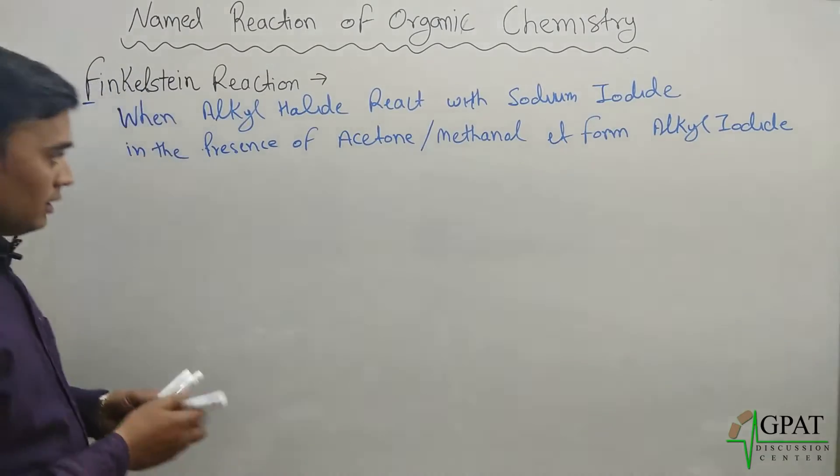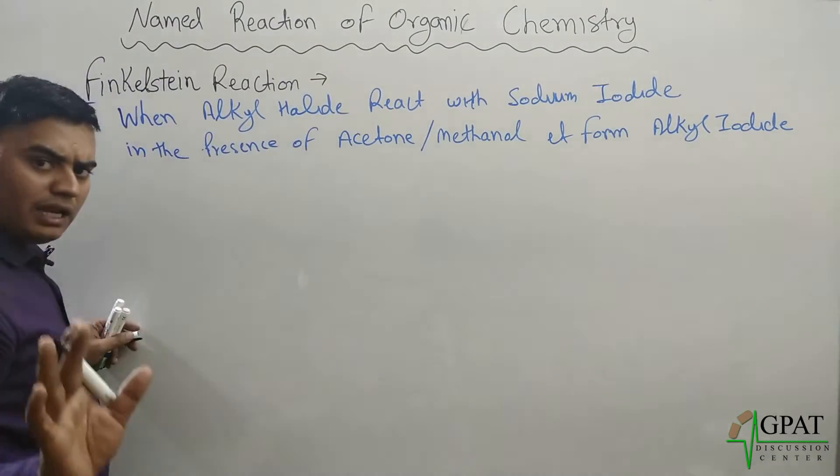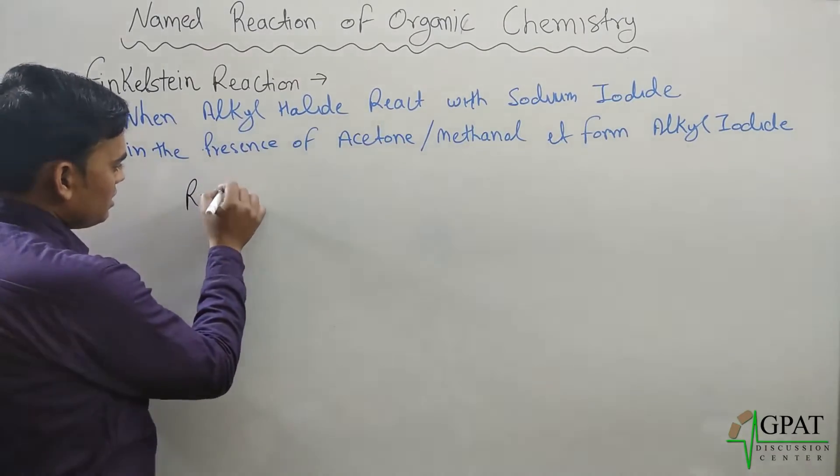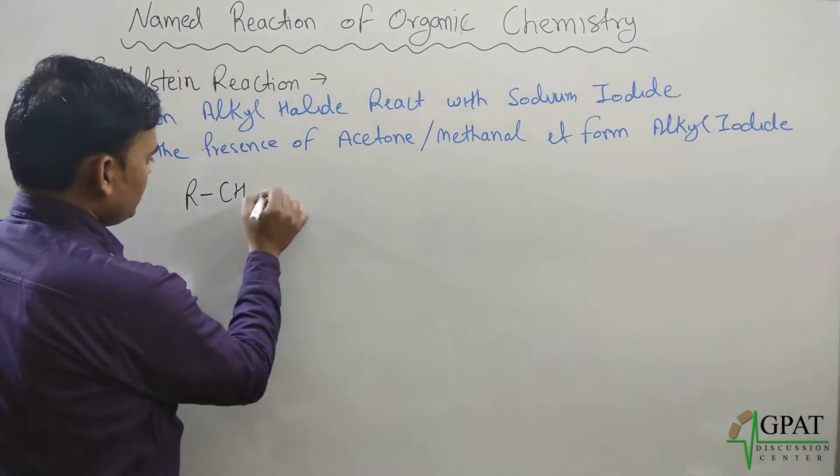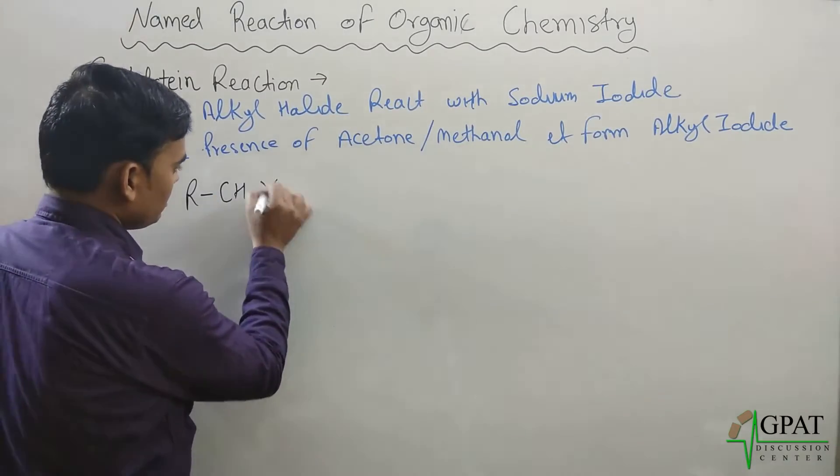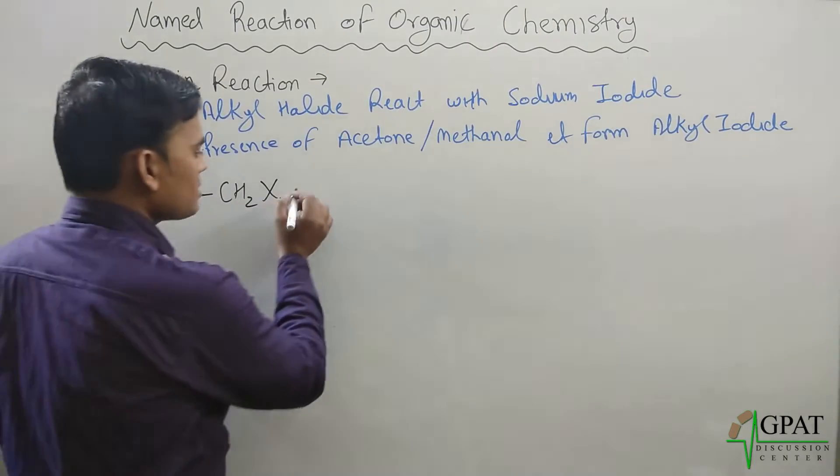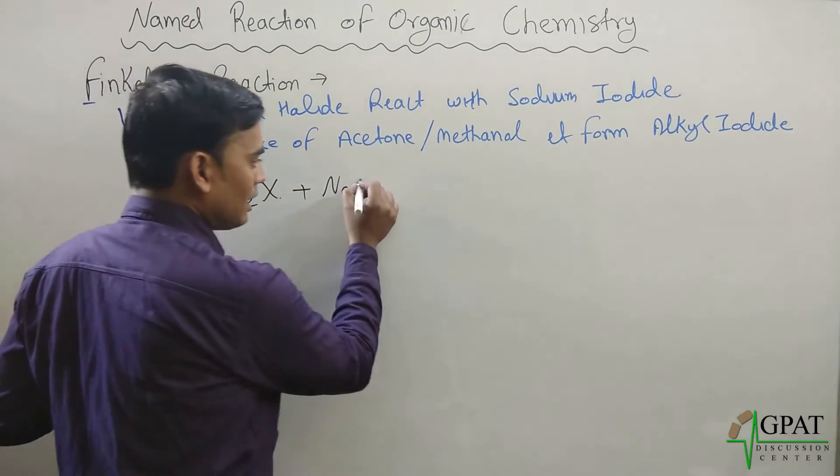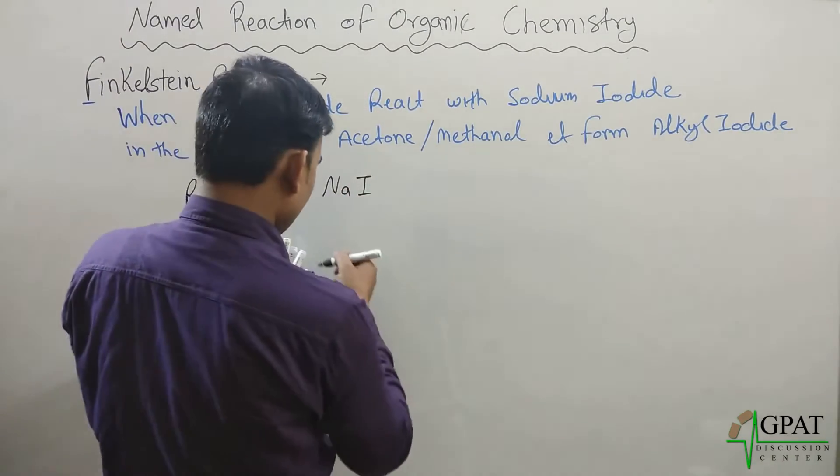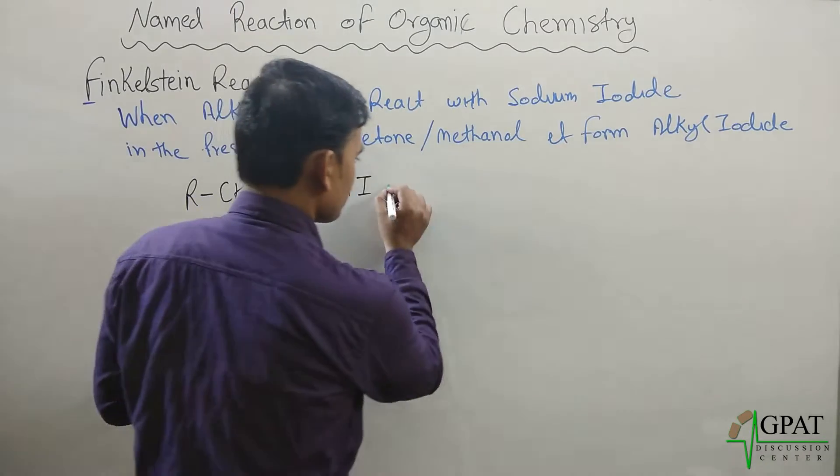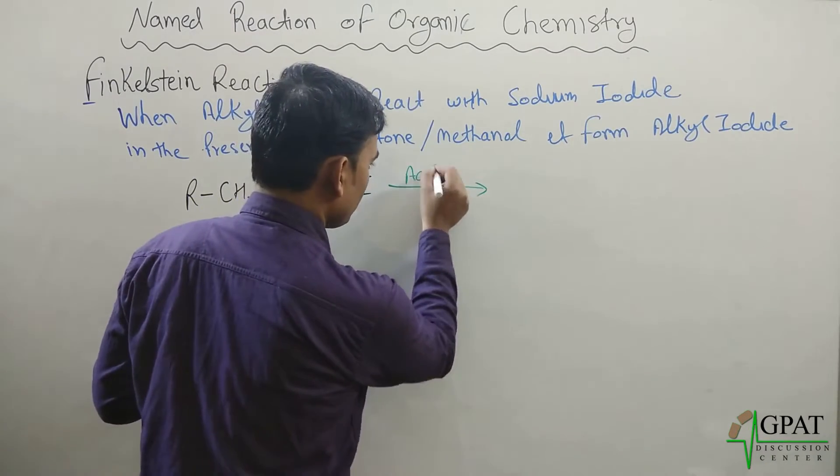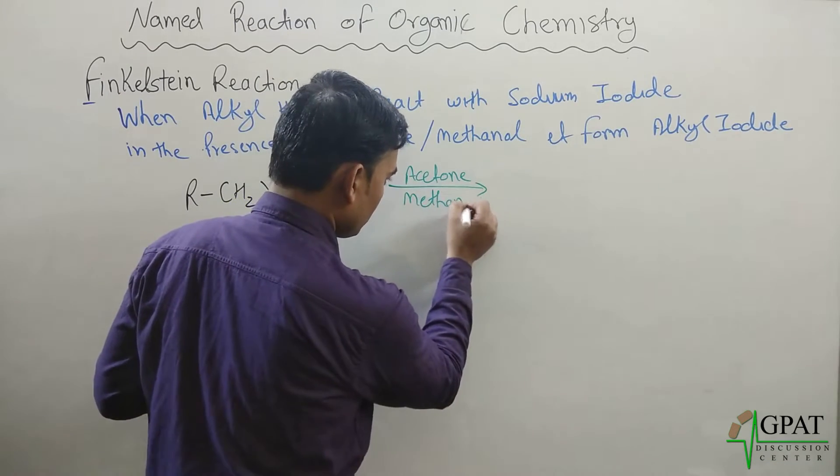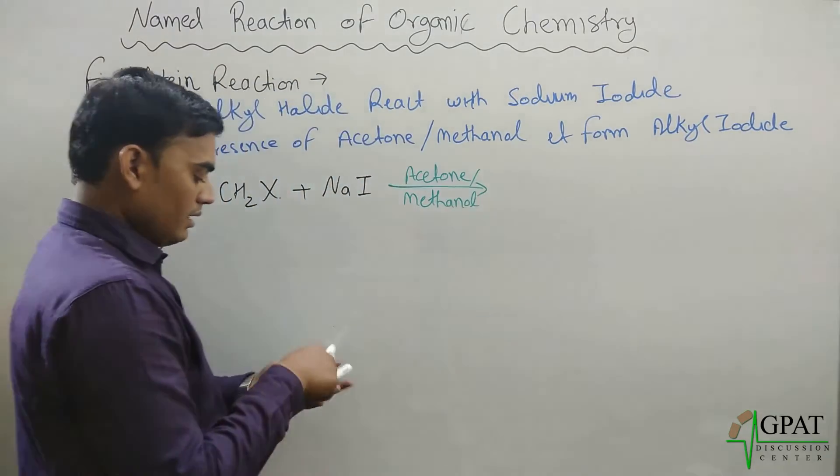So what happened? Take any alkyl halide, suppose this is R-CH2-X, and this compound reacts with sodium iodide, and this reaction occurs in the presence of acetone or methanol.